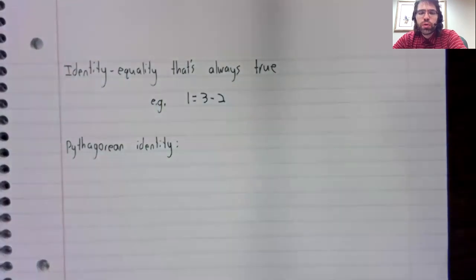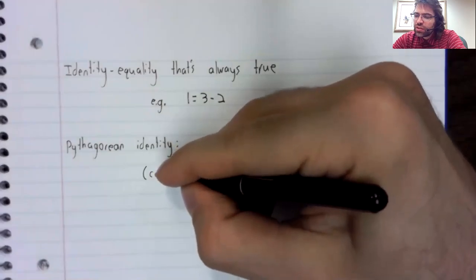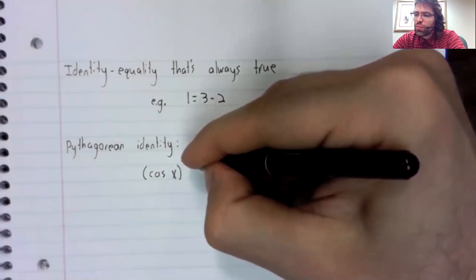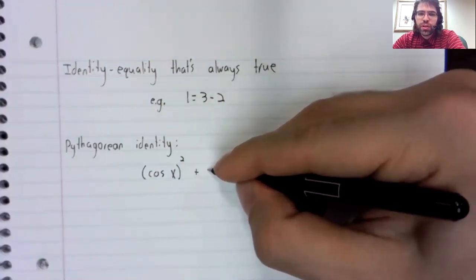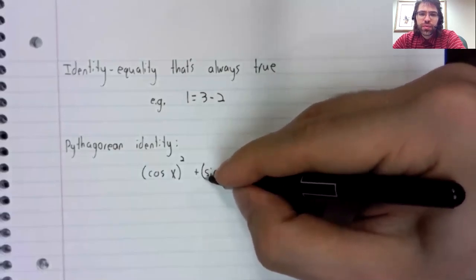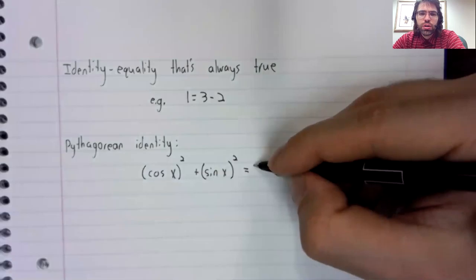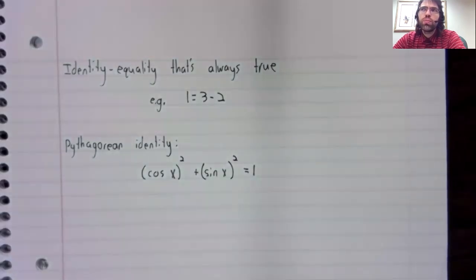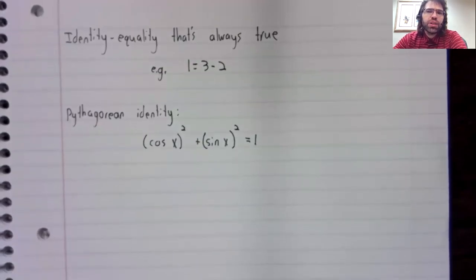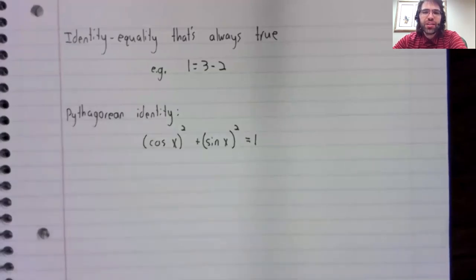The Pythagorean identity is more interesting. It says that the cosine of a number squared, plus the sine of that same number squared, always equals one.